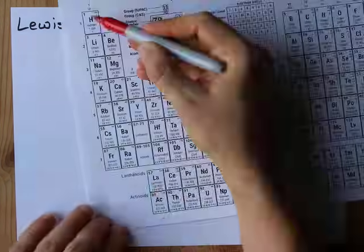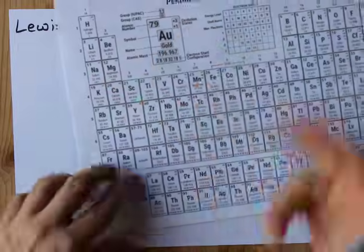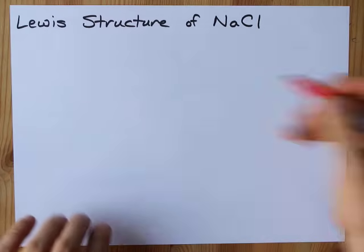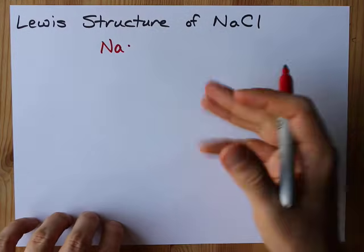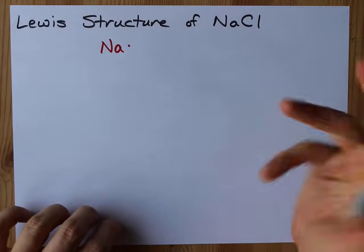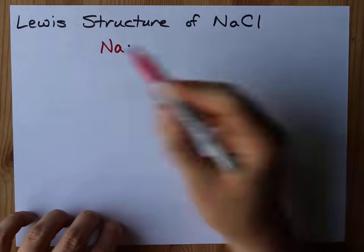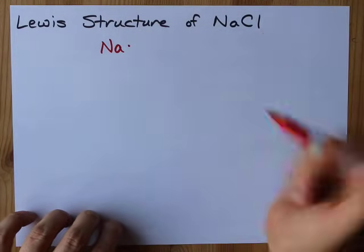Na is in the first column and brings one valence electron with it. So Na originally, before it does any ionic-ing or whatever, has one electron. This is the Lewis dot diagram for just a regular sodium.